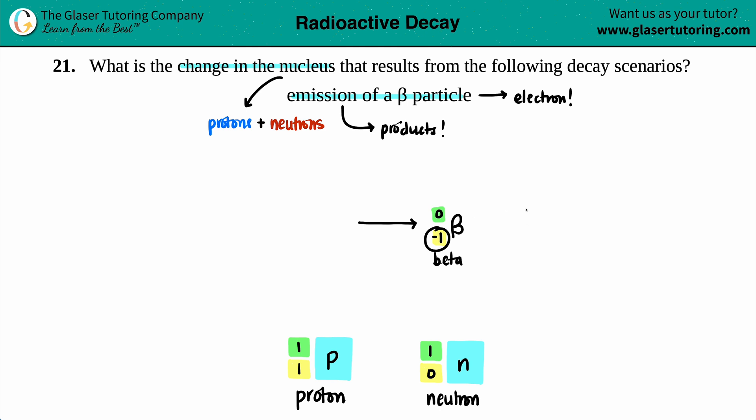So which subatomic particle has a positive one charge as their atomic number? Yeah, you're absolutely correct. The proton. Protons are always plus one. Neutrons are neutral. They have no charge.